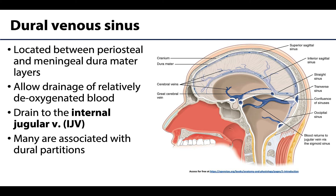So what are dural venous sinuses? These are complex networks of venous-like channels that drain relatively deoxygenated blood from the brain and surrounding cranial bones. Similar to veins, these form specifically between the dura mater layers — between the periosteal and meningeal dura mater layers. Many of them are actually associated with dural partitions as well, such as the falx cerebri and the tentorium cerebelli.